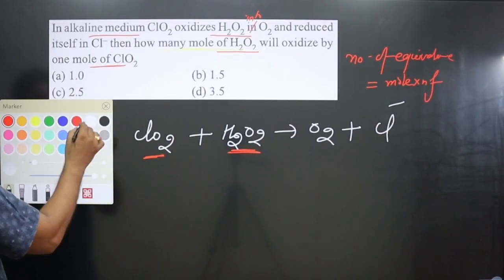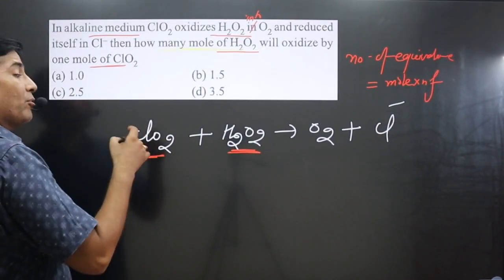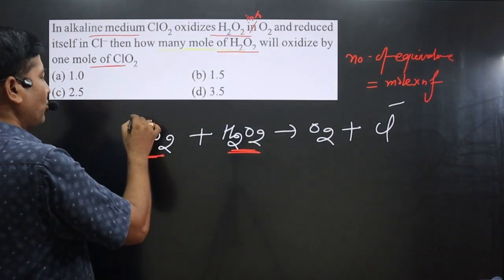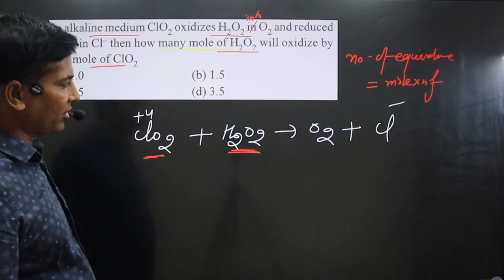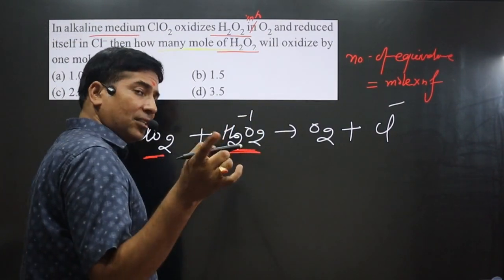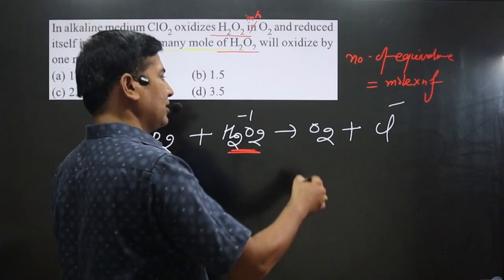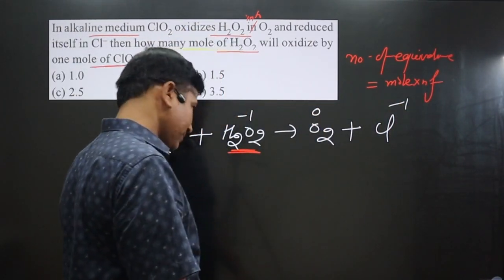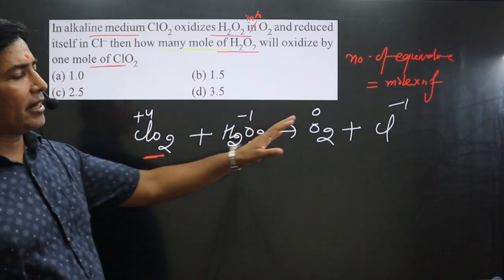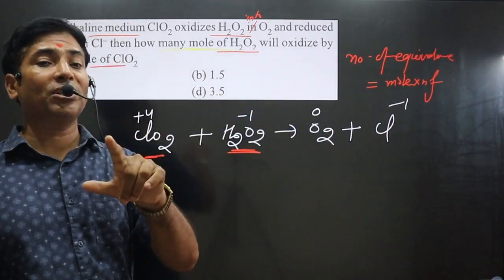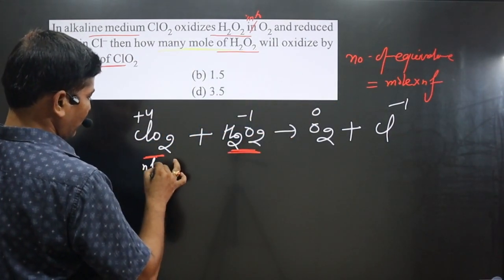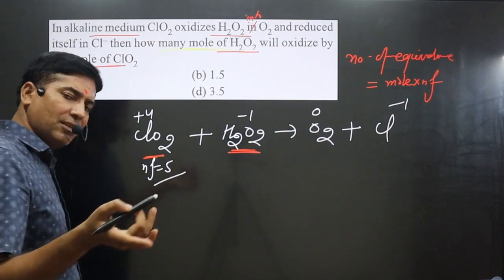Let's calculate the n-factor value. We calculate the oxidation number of each element on both sides of the equation. Chlorine is present in +4 oxidation state in ClO₂, and on the other side it is -1 (Cl⁻). The difference in oxidation number is: 4 − (−1) = 5. So the n-factor for ClO₂ is 5.